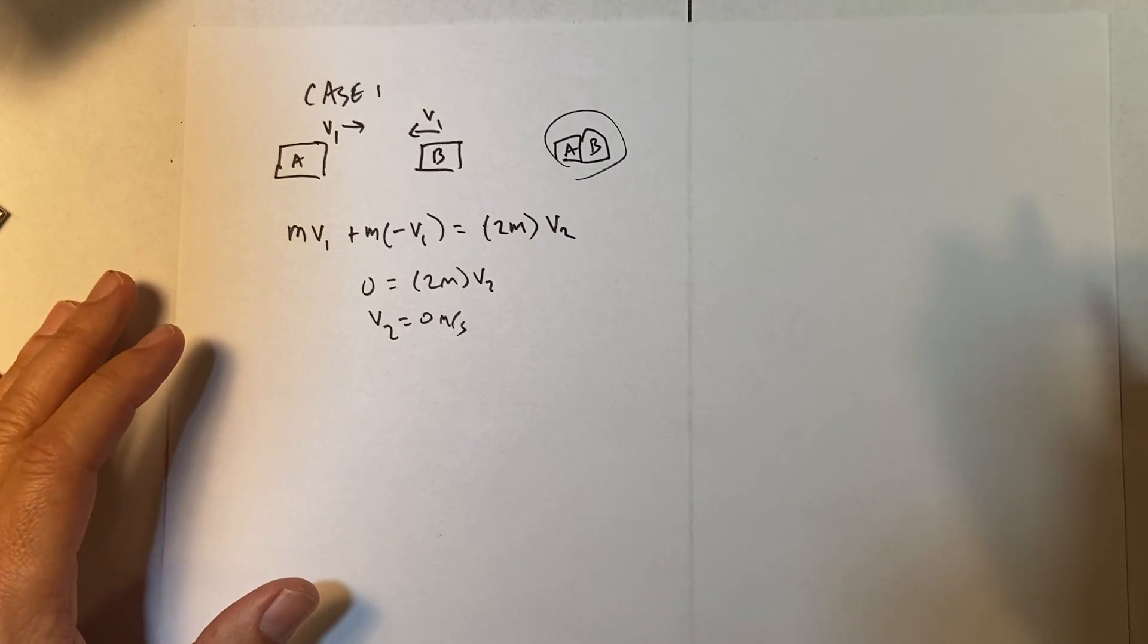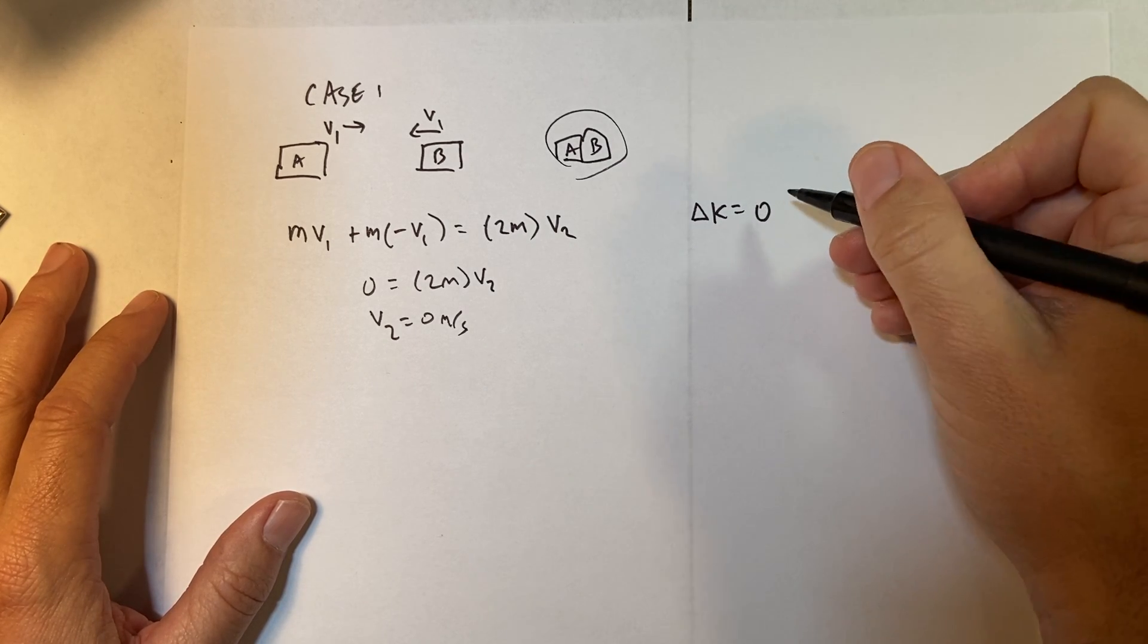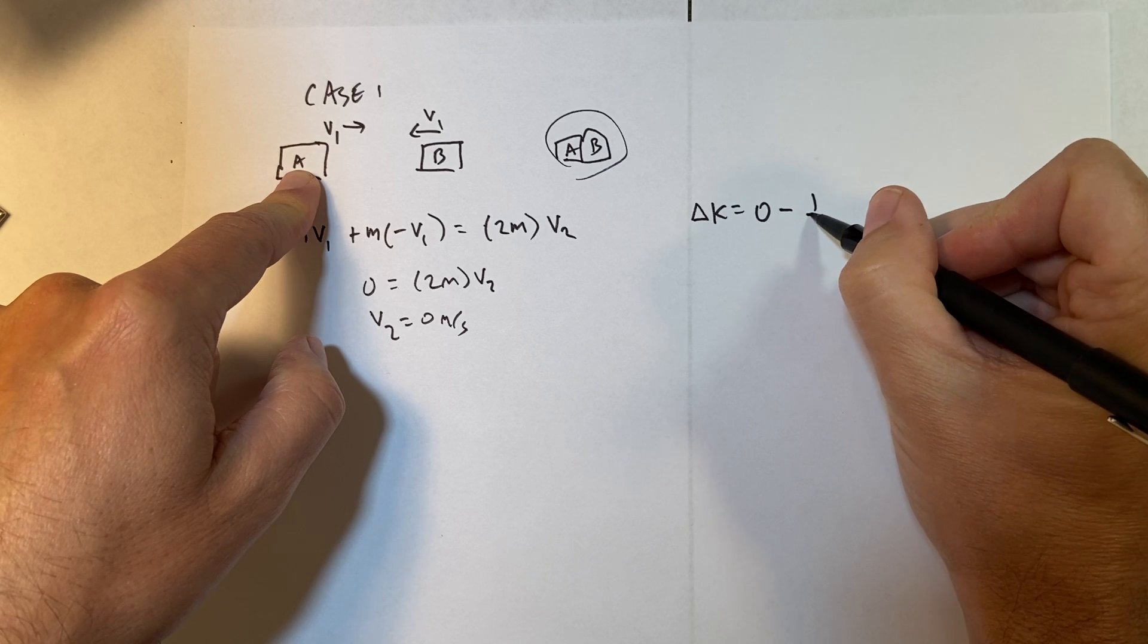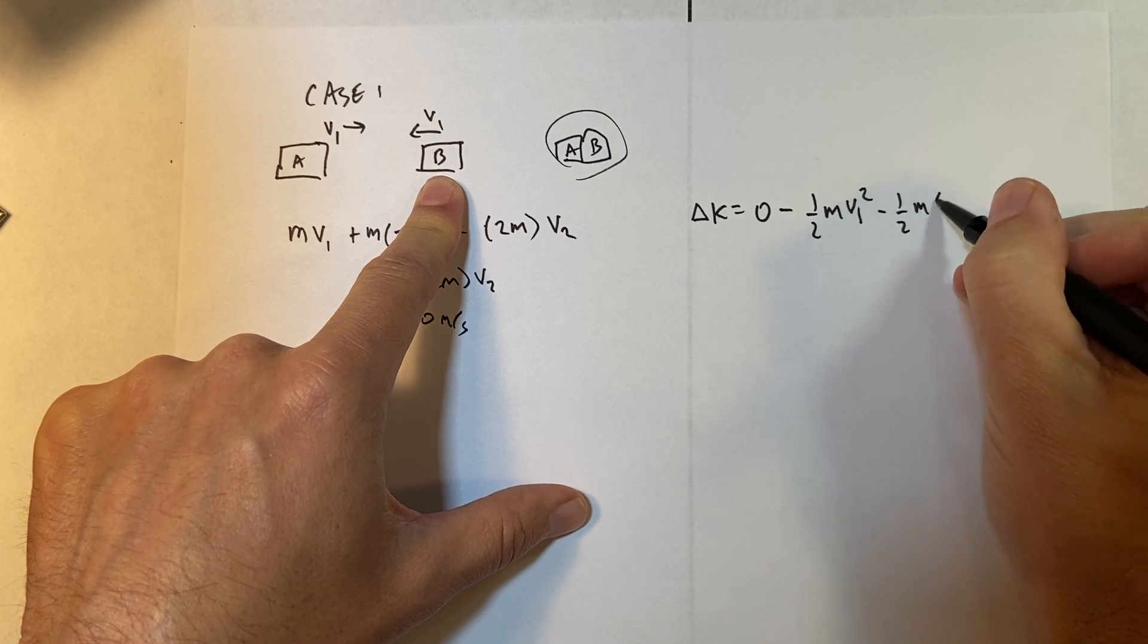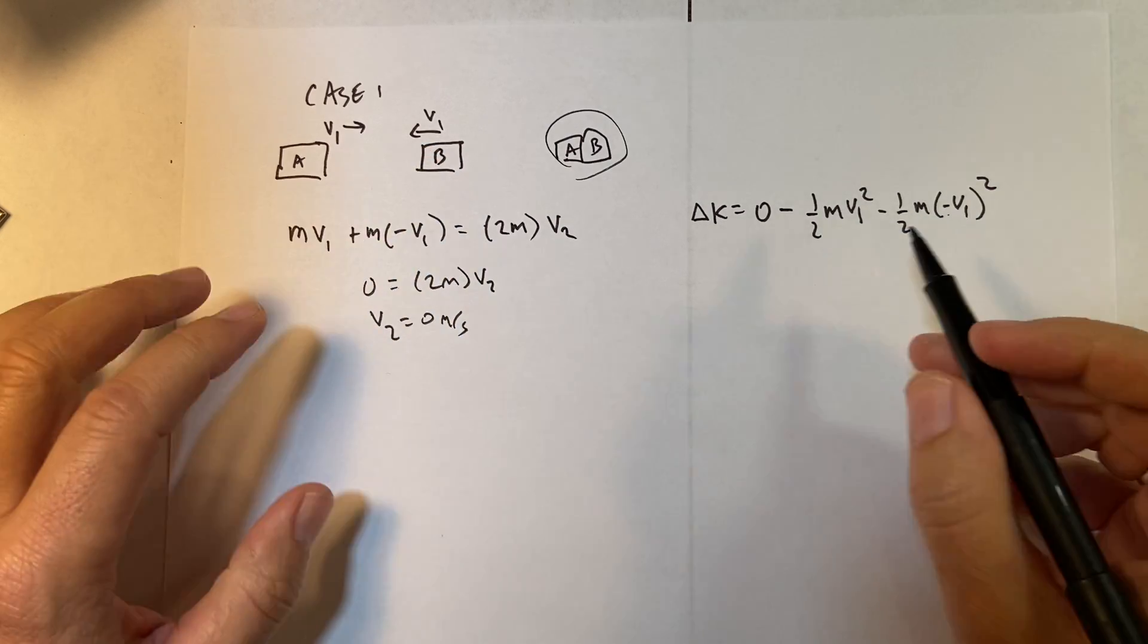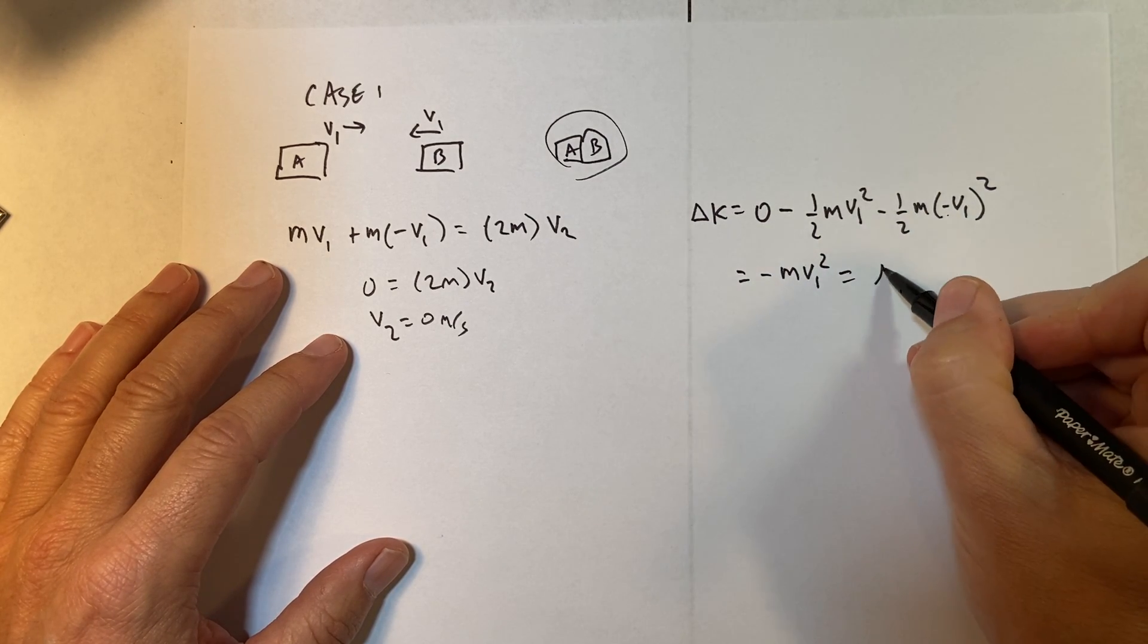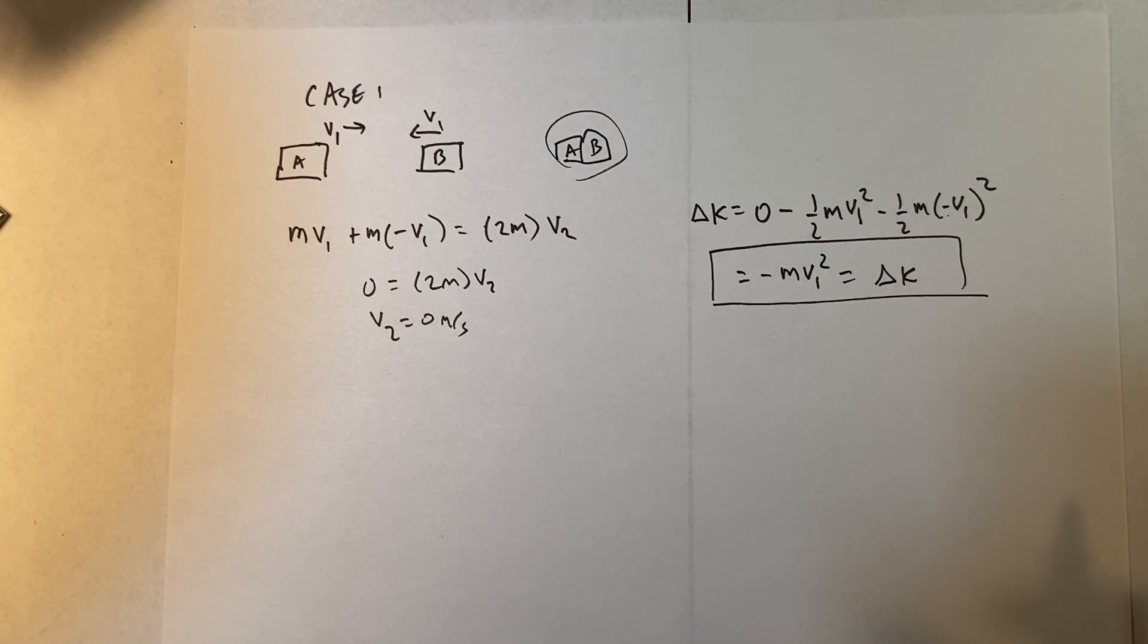Now, what I want to do is define the change in kinetic energy. So delta K is going to be the final kinetic energy, zero, minus the initial kinetic energy. So it's going to be minus the kinetic energy of this one half MV1 squared minus one half M negative V1 squared, because that one had a velocity of negative V1, but I squared. So this gives a change in kinetic energy of one half MV1 squared minus one half MV1 squared or minus MV1 squared. Delta K.